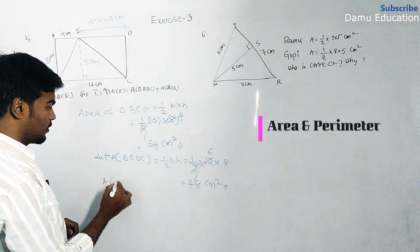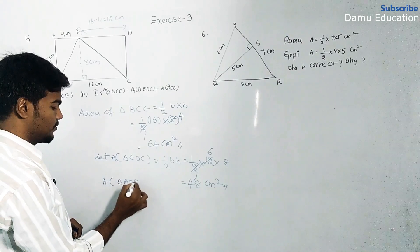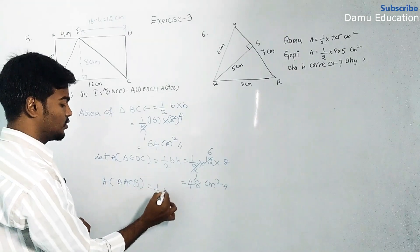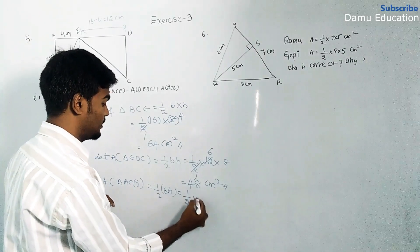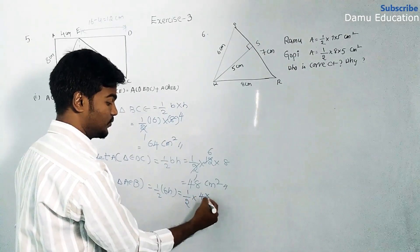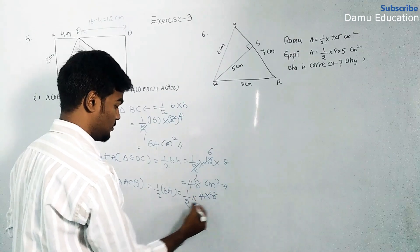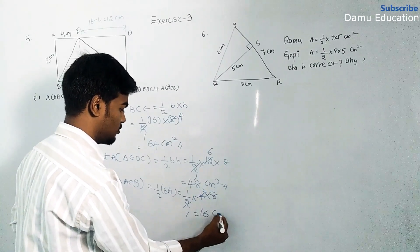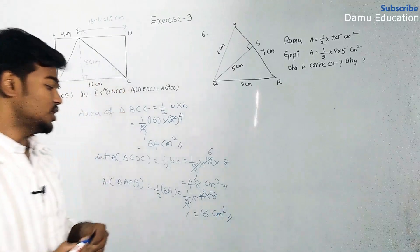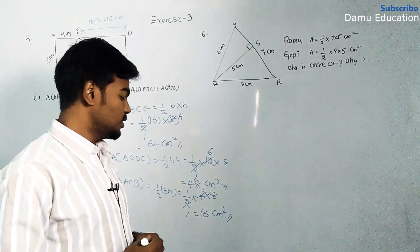Area of triangle ABE: half into base into height. Base is 4 cm and height is 8. So we get 16 cm square.